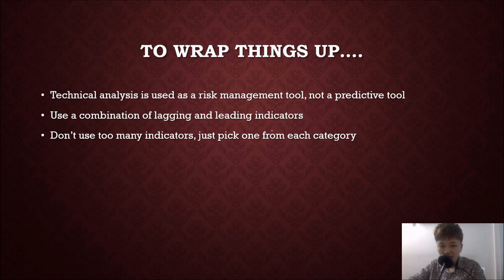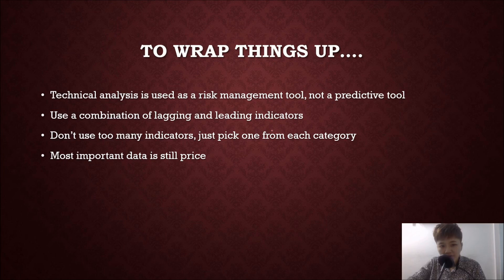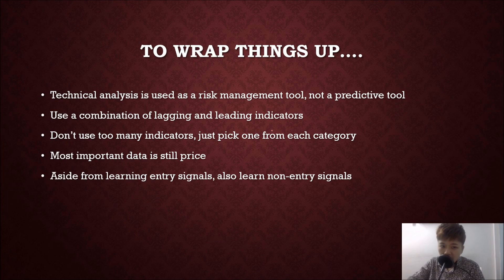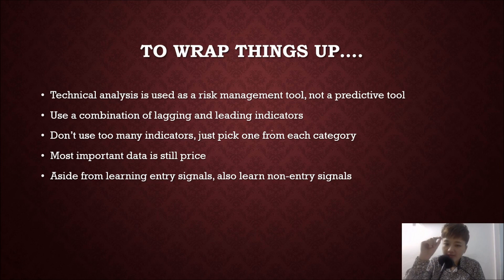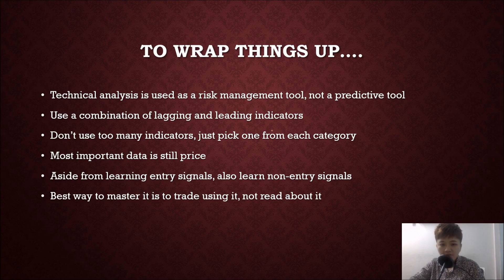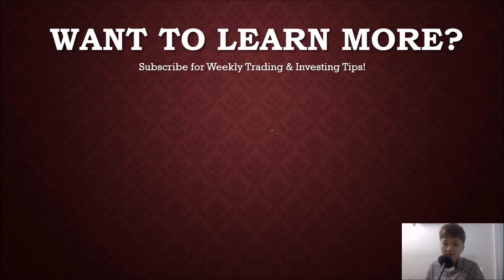Don't use too many indicators — just pick one from each category: one momentum indicator, one volatility indicator, one trend indicator, or two at most. At the end of the day, the most important data is still price — make sure you learn price action properly. Aside from learning entry signals, you also need to learn how to spot false signals. Learn both your entry signals and false signals so you recognize them in context. The best way to master technical analysis is to actually trade using it — not just read or think about it.